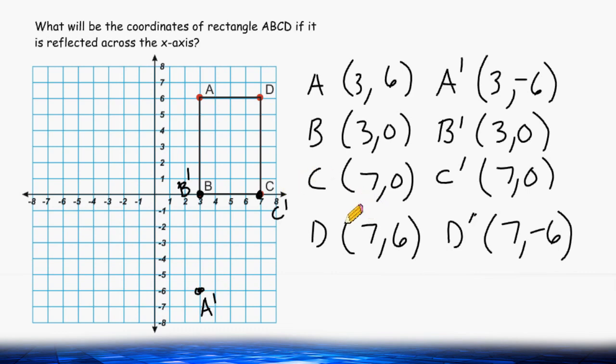And point D is (7, -6), which is right here. Now we connect our points together to form our shape. And this is the reflected rectangle across the x-axis.